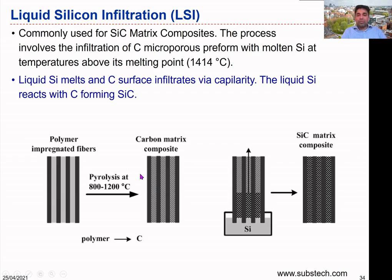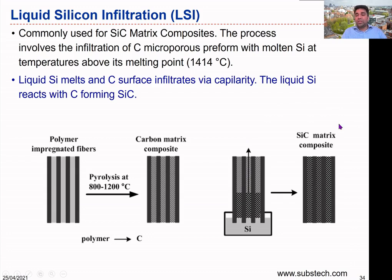We place the carbon matrix composite structure over the preform, which is pre-prepared based on the conditions. Then we place it inside the liquid silicon container, and due to the capillary reaction, the silicon infiltrates into the fiber preform. At the same time, a reaction takes place to form the silicon carbide — the liquid silicon reacts with the carbon within the structure, forming the silicon carbide matrix, and we get the final product.